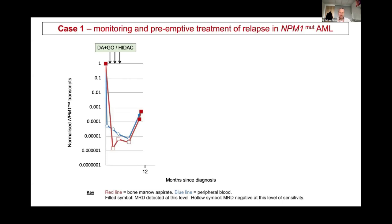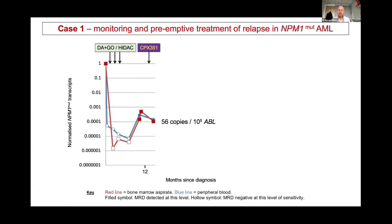General practice is now moving towards intervening at this stage rather than waiting for frank relapse. This particular patient received a chemotherapy intervention called CPX-351, one of the randomisations in the clinical trial protocol, and the MRD had gone down slightly on regeneration following that. The next question is whether the patient can go for transplant, or whether the level is too high — an example where we need absolute copy numbers. Data from the AML17 study have defined thresholds of MRD positivity of 200 copies per 10^5 ABL in the blood and 1,000 copies in the bone marrow, which can reliably split patients into two groups with very good or very poor outcomes.